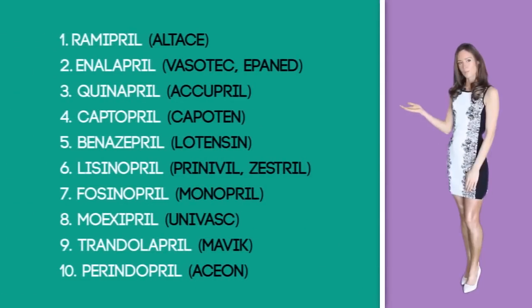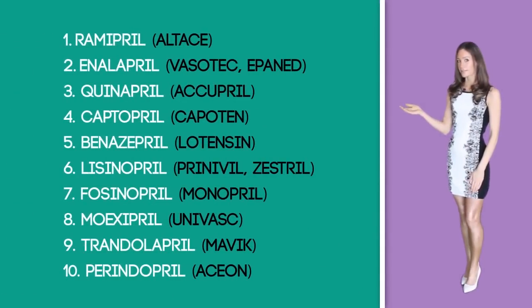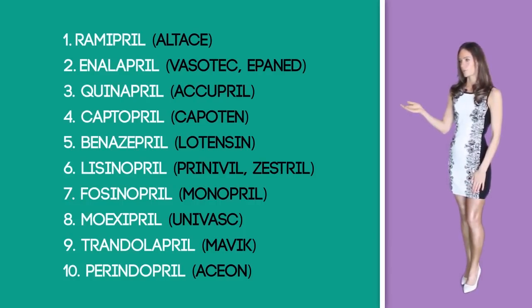In the United States, 10 ACE inhibitors in use are ramipril, enalapril, quinipril, captopril, benazepril, lisinopril, fosinopril, moexipril, trandolapril, and perindopril. Note that all of the brand names of these medications end with the suffix "-pril."